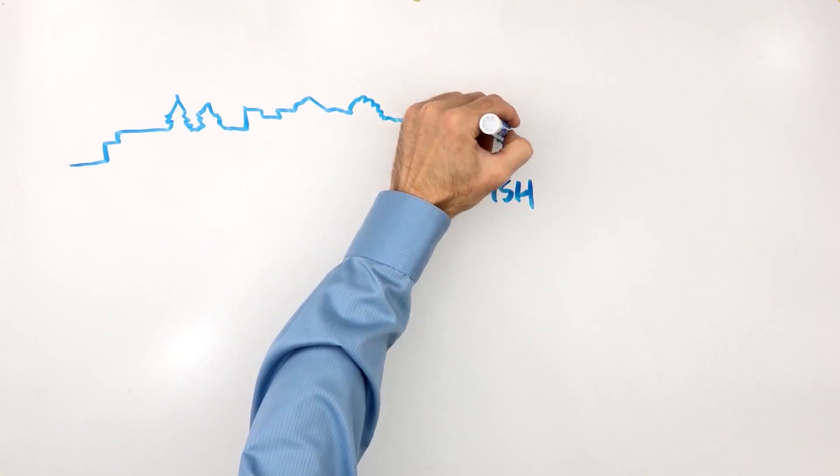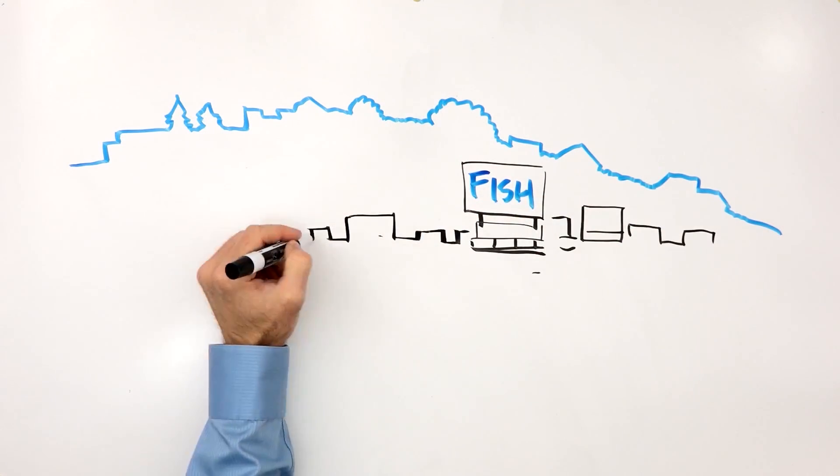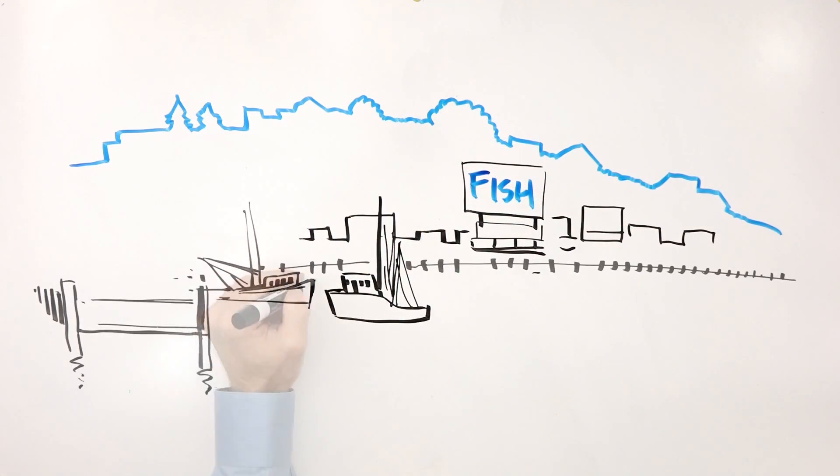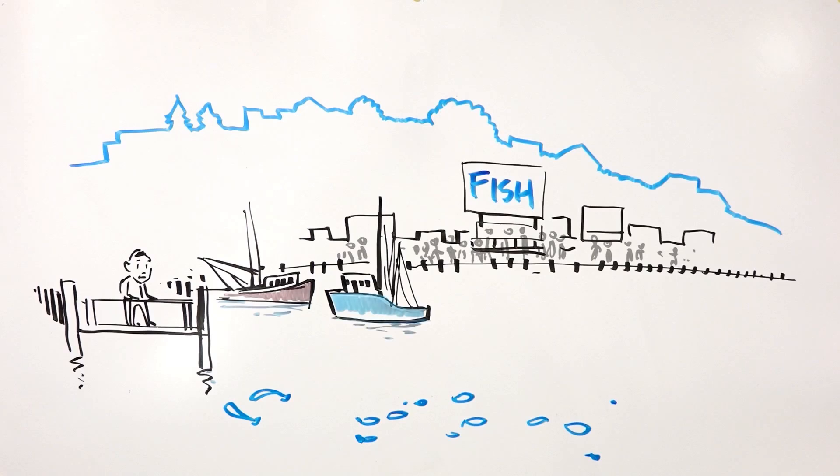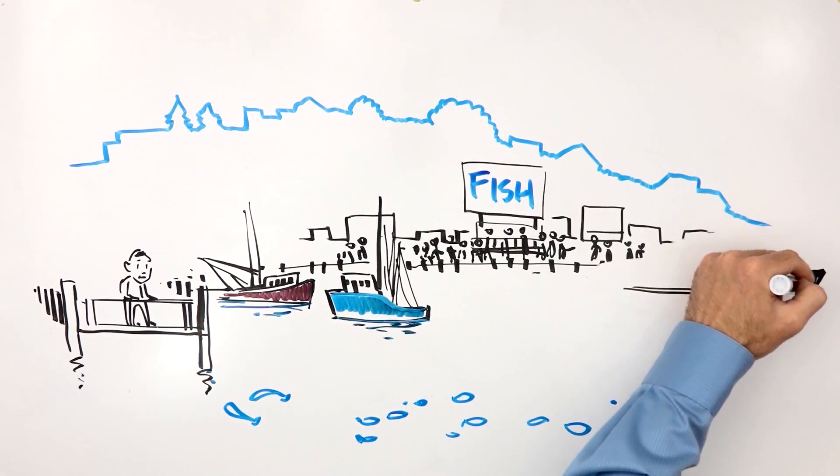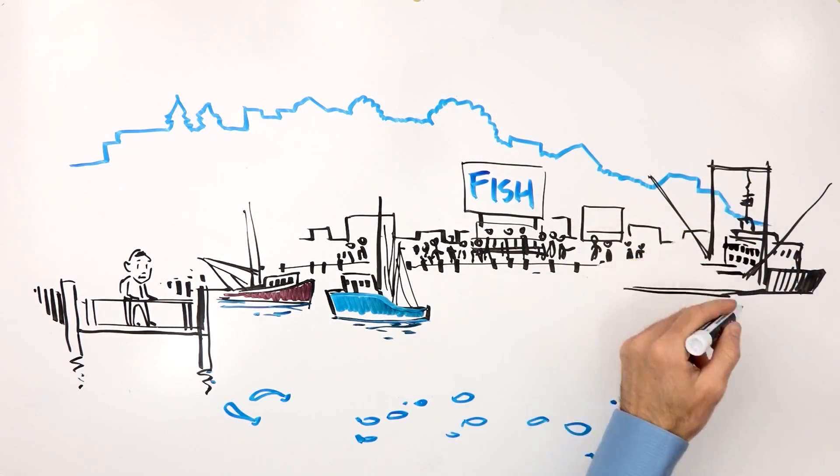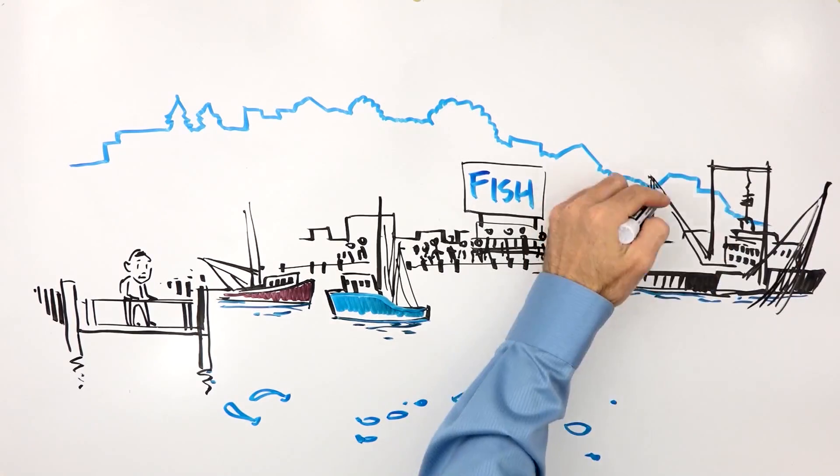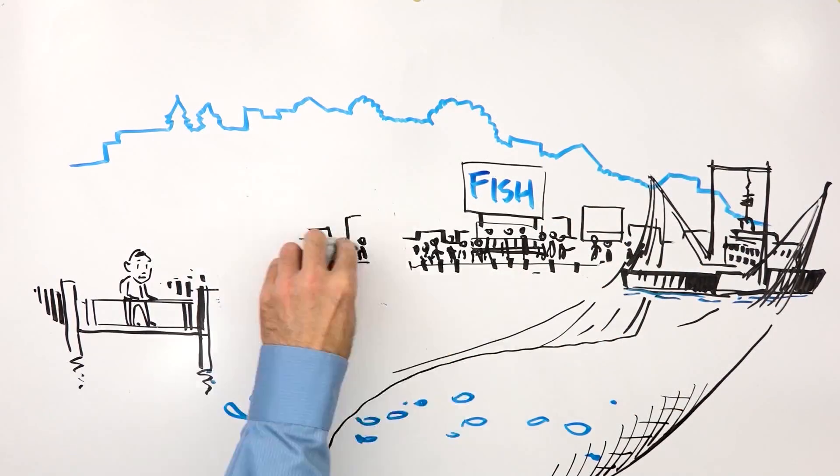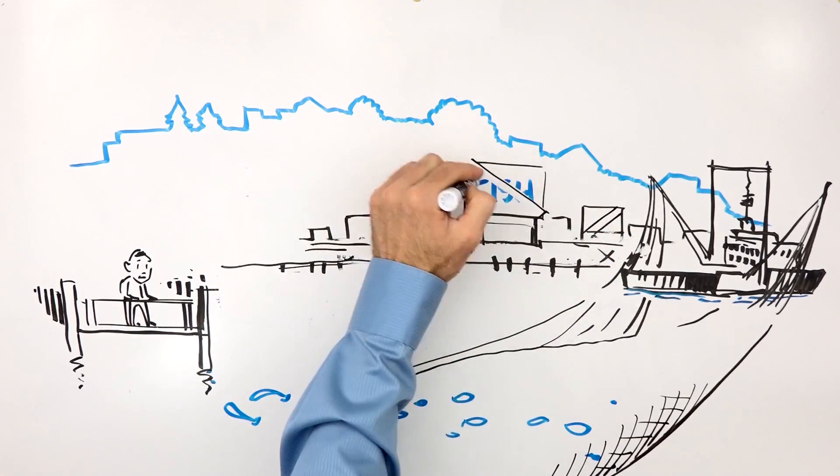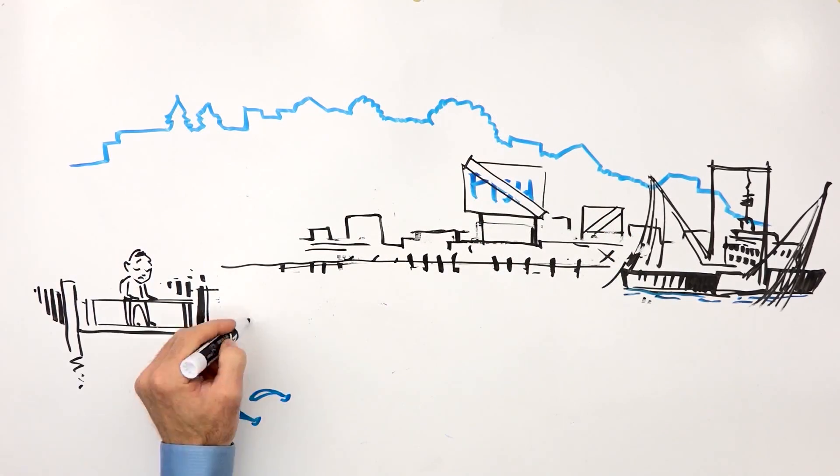Fish and fisheries have always played an important role in the culture and livelihoods of Europeans, and most people don't want that to change. But it might, if fishing limits continue to be set at unsustainable rates. Without sufficient fish to catch, jobs, lifestyles and even entire coastal communities could collapse.